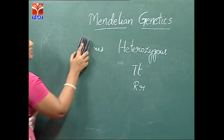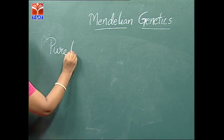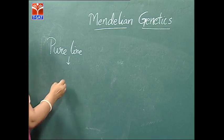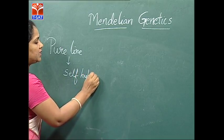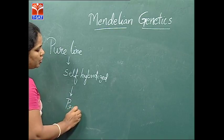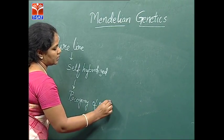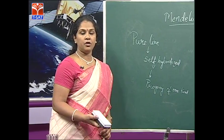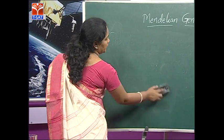The next important terminology is pure line. Pure line means a number of generations of self-hybridized plants, so that all the progeny is similar and you get only progeny of one kind.